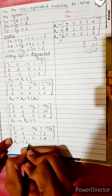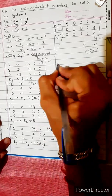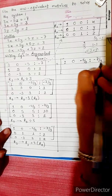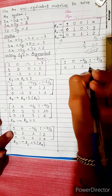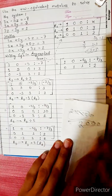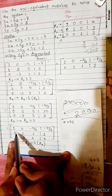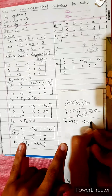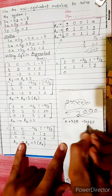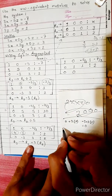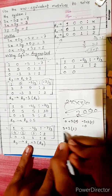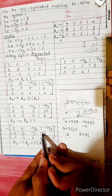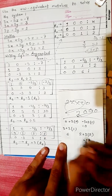R3 changes into R3 plus 3 times R2. The current matrix rows are R1: [1, 0, -5/3 | -7/3], R2: [0, 1, 1 | 2]. For R3: 0 + 3×0 = 0, -3 + 3×1 = 0, 3 + 3×1 = 6, and 2 + 3×2 = 8. So new R3 is [0, 0, 6 | 8].